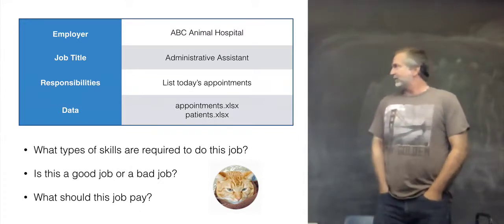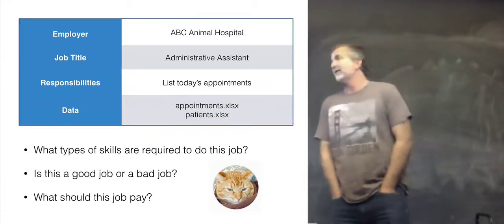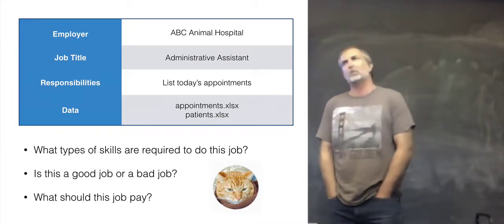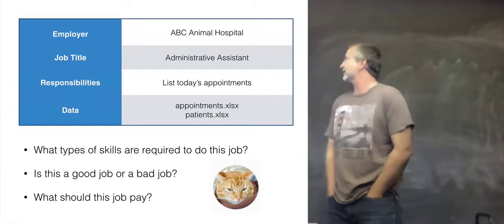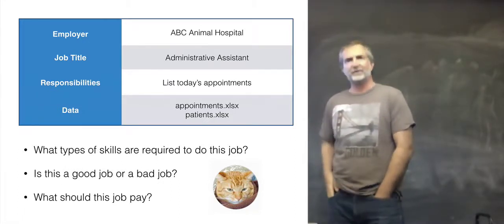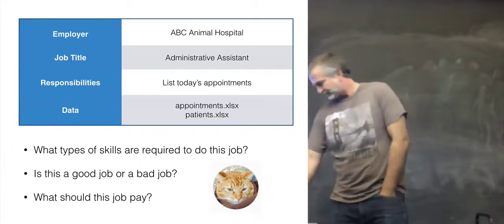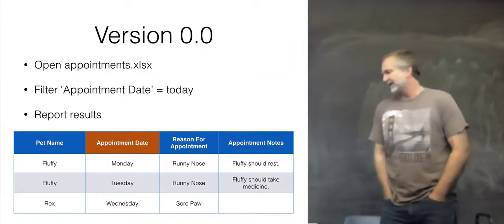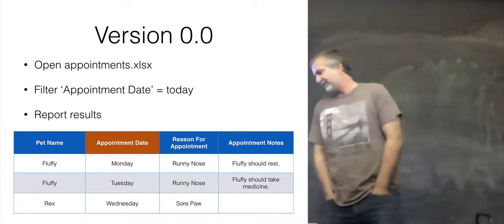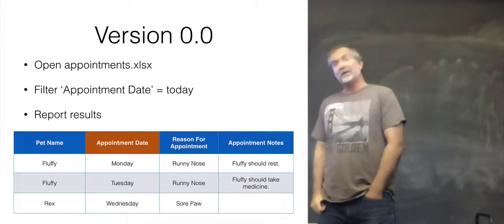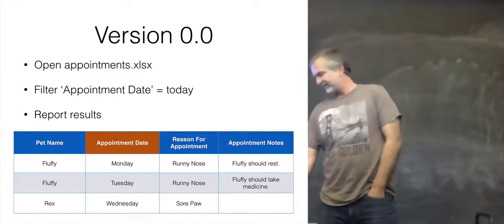So what we're going to do is we all have a job here at the animal hospital. We've been hired as a secretary. We have one job: we're going to open an Excel file called appointments, we're going to list today's appointments, and we're going to report them to a bunch of people. So first day of the job, we're going to open up Excel, we're going to filter on appointment date, and pretty cush job. So we've got a lot of time to learn Ruby, hopefully.